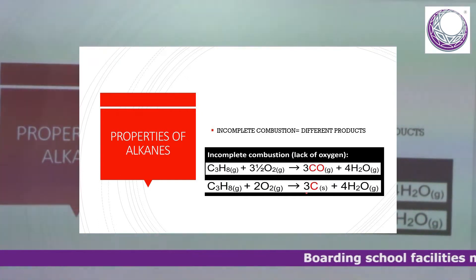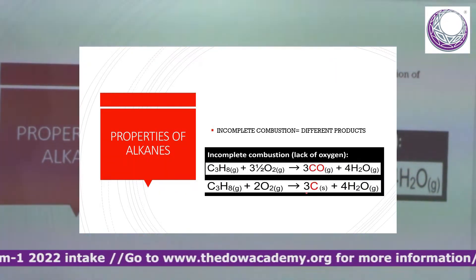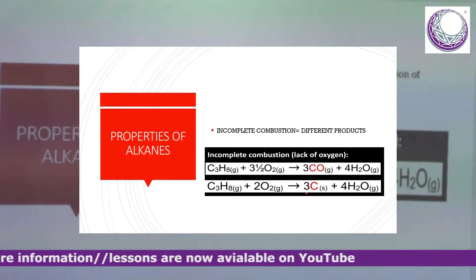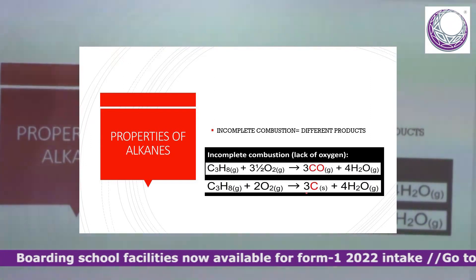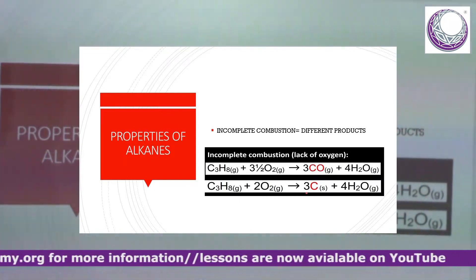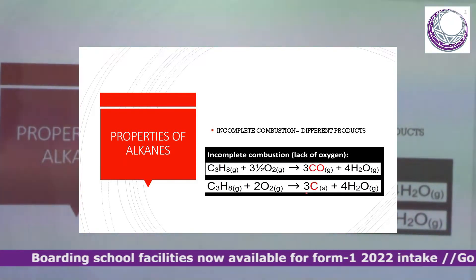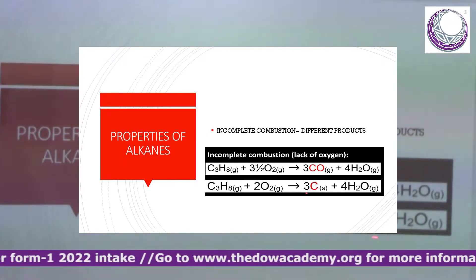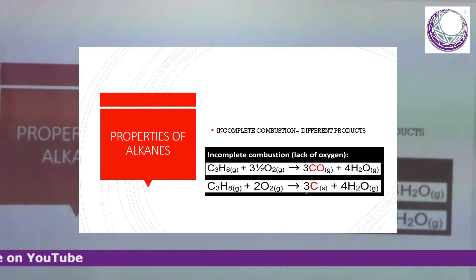In incomplete combustion — for example, when a car is well serviced and there is no shortage of air, complete combustion occurs, producing carbon dioxide and water vapor. But when there is a lack of oxygen, such as in a car engine, the alkane is incompletely burnt and gives rise to carbon monoxide and water, or can give carbon (soot) and water. This soot is what we see coming out of the car during incomplete combustion of fuel.